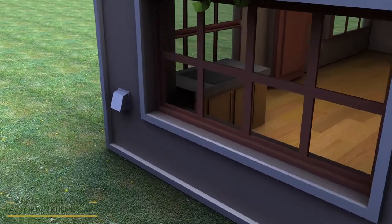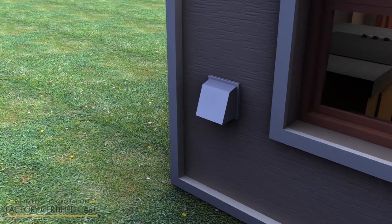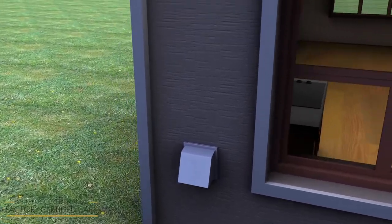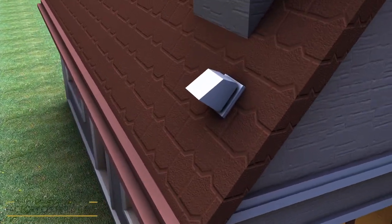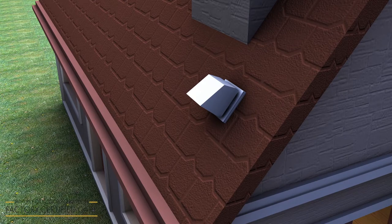A vent cap with a backdraft damper will need to be installed over the venting on the home's exterior wall or on the roof. Caulking should be used to seal the space around the cap.